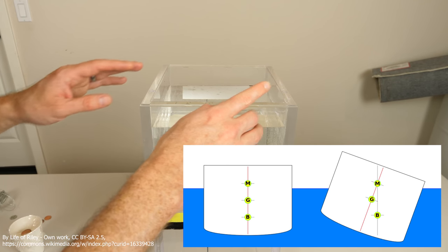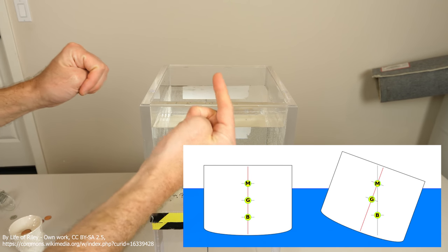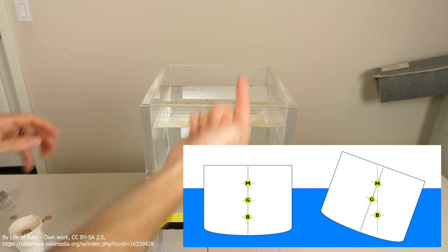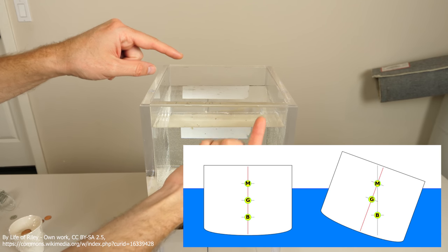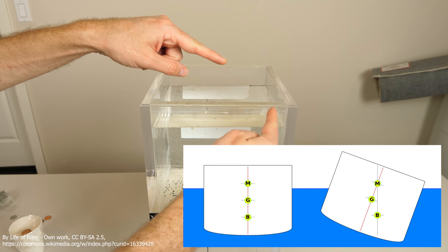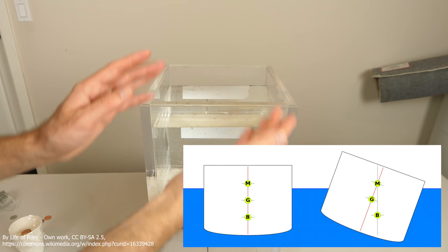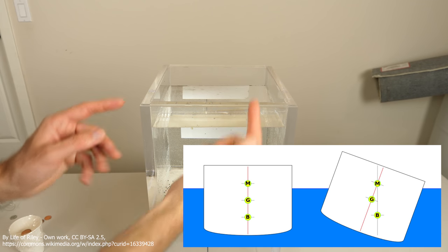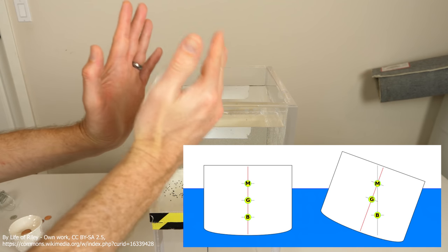And so the center of buoyancy moves over to the right. And because it moved to the right, the force of buoyancy is up. And so it wants to tip it back the other way. And when it tips it back the other way, then the center of buoyancy moves the other way. And so it always wants to right itself. It always wants to push up and push back the other way to keep it stable.